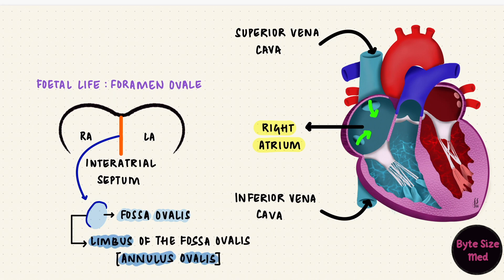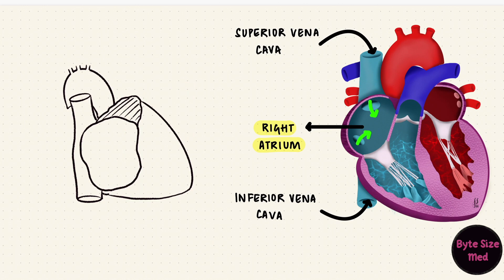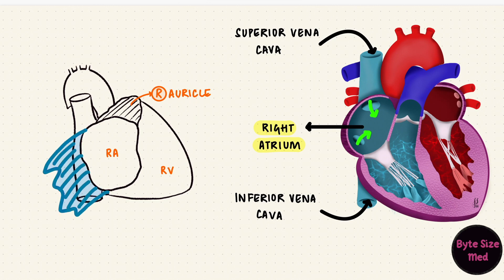In an atlas or a textbook, you'd see the right atrium usually from an angle like this, with the heart rotated showing the right atrium, the right ventricle, and the right auricle projection. If we open up the right atrium, here we have the musculi pectinati, the superior vena cava opening, the inferior vena cava opening guarded by the eustachian valve, the coronary sinus opening guarded by the thebesian valve, and the fossa ovalis with the limbus of the fossa ovalis.